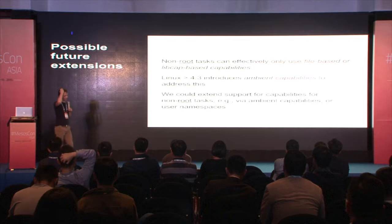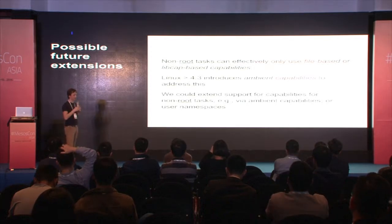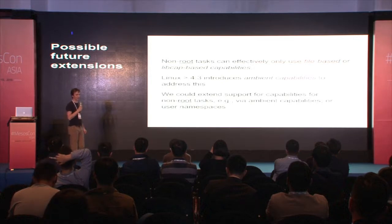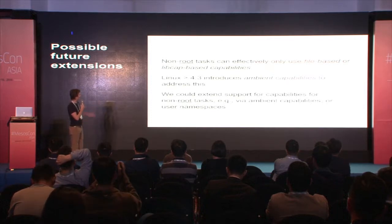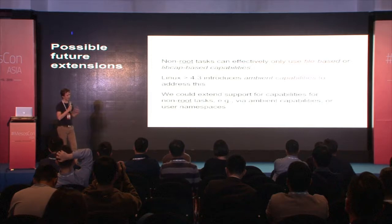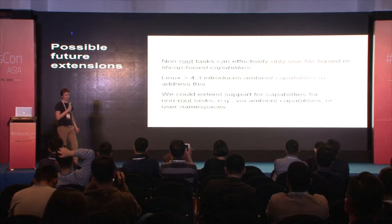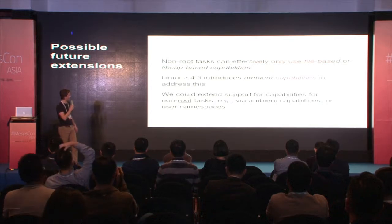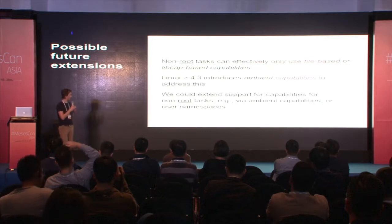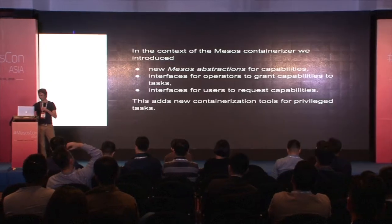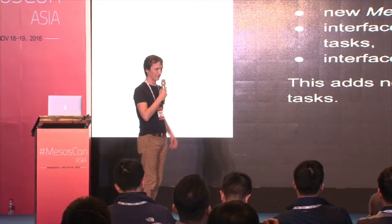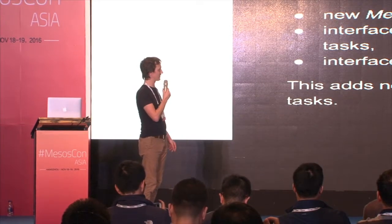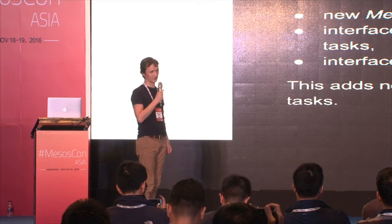For future extensions: currently non-root tasks can effectively only use file-based or libcap-based capabilities, and they lose all their capabilities if they fork. Linux kernel 4.3 introduces ambient capabilities to address this issue. We're thinking about adding support for this feature to Mesos — we could expose ambient capabilities, or we could use user namespaces. What we have now: new abstractions to talk about capabilities on the agent and task level, interfaces for operators to grant capabilities to tasks, and for users to request capabilities — a new tool to work with privileged tasks.